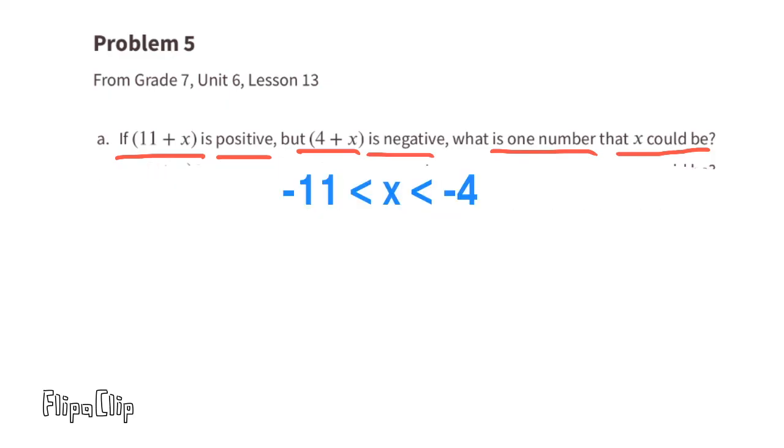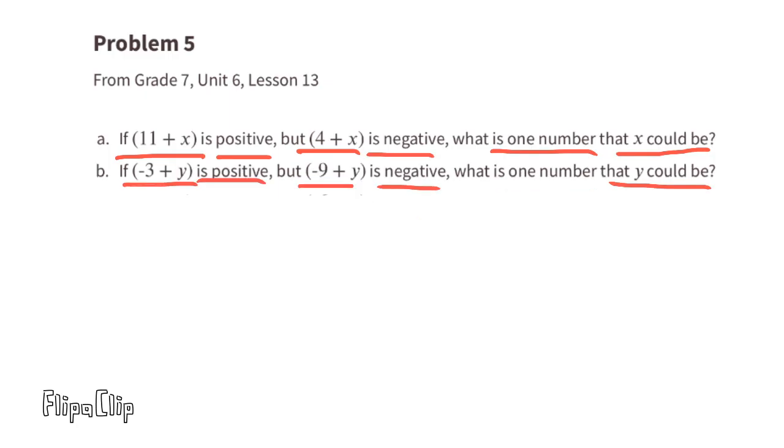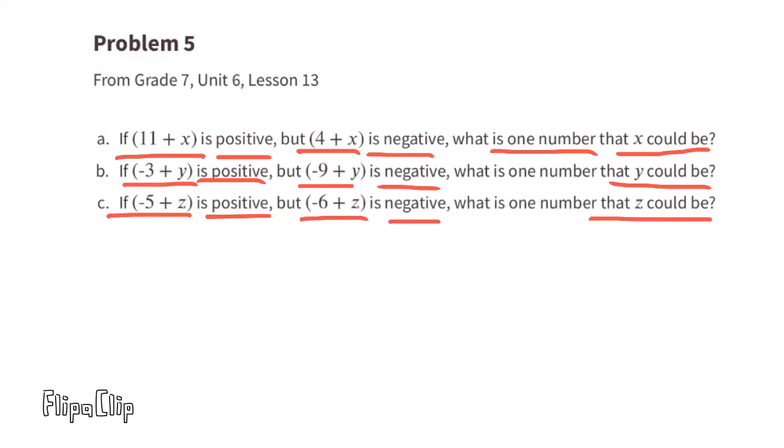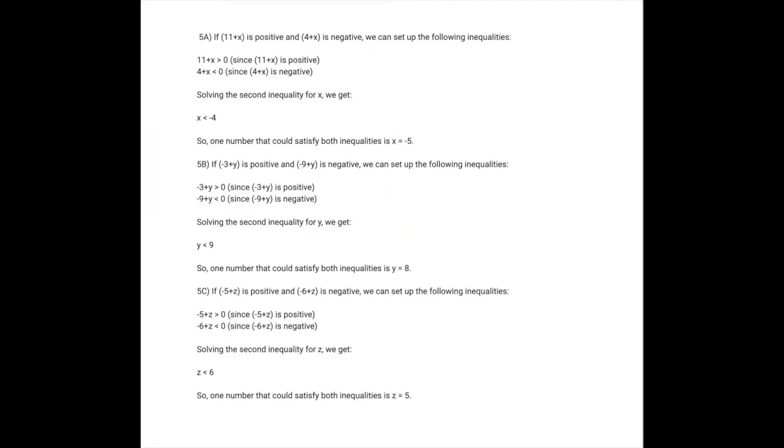X can be any number that's greater than negative 11, but less than negative 4. B. If negative 3 plus y is positive, but negative 9 plus y is negative, what is one number that y could be? Y has to be a number that's less than 9, but greater than 3. C. If negative 5 plus z is positive, but negative 6 plus z is negative, what is one number that z could be? Z must be a number that's less than 6, but greater than 5. Pause the video so you can read the reasoning for number 5.